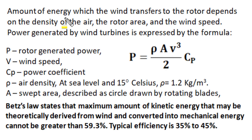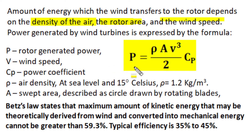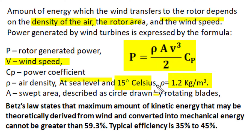The amount of energy which wind transfers to the rotor and produces as electrical energy is directly proportional to the kinetic energy of wind flow across the rotor sweep area. It depends upon the density of air, the sweep area of the rotor blades, and the wind speed. The power generated by a wind turbine is expressed by the relation: P = ½ · ρ · A · V³ · Cp, where P is the rotor-generated mechanical power, ρ is the density of air — approximately 1.2 kg/m³ at 15°C near sea level.